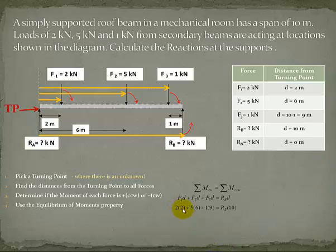Putting in our numbers, we can see that we have numbers for each of these three moments that are going clockwise, and we have an unknown here. This is a linear equation, which we can rearrange and solve for. Our reaction at B is 4.3 kilonewtons.